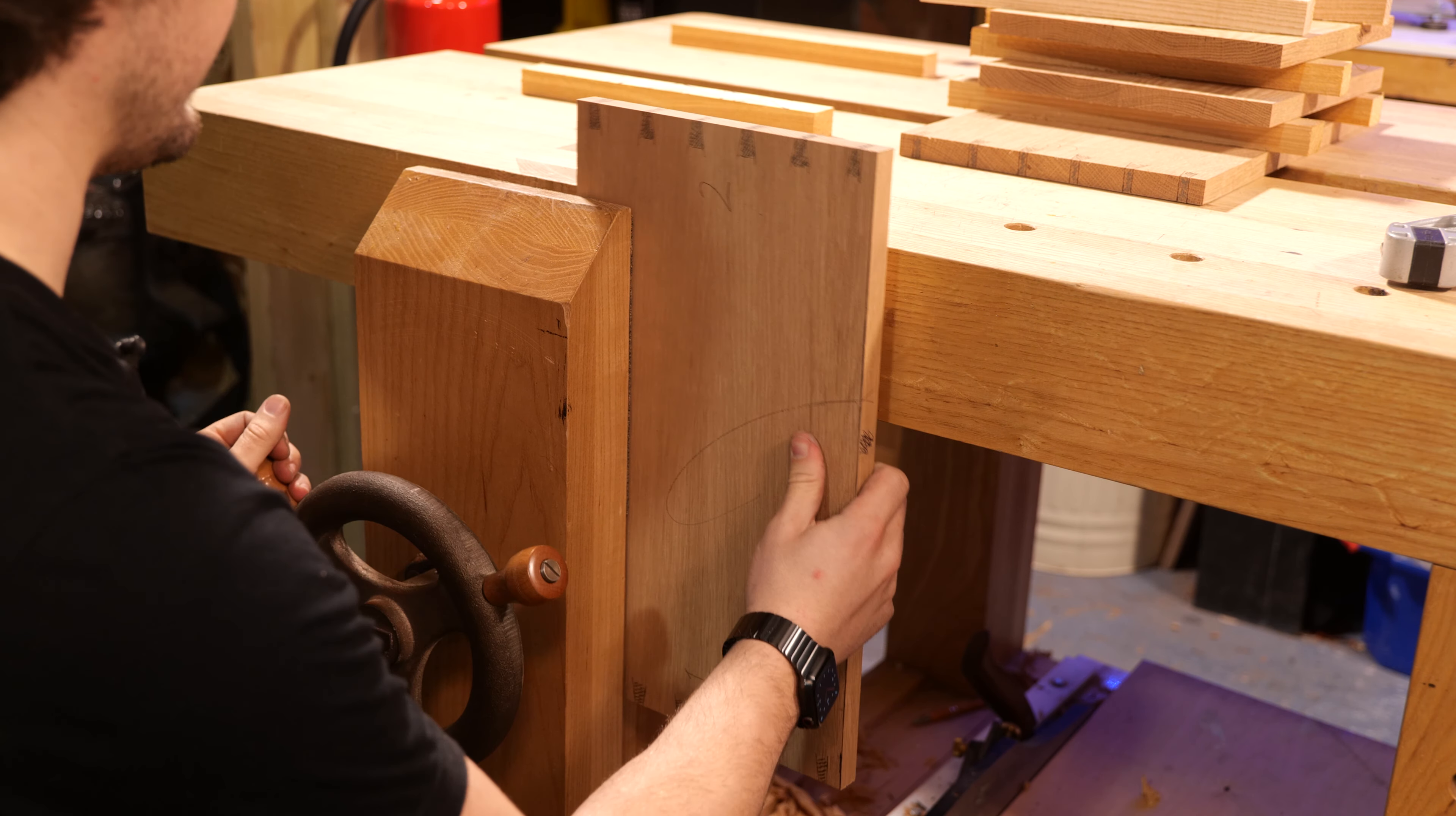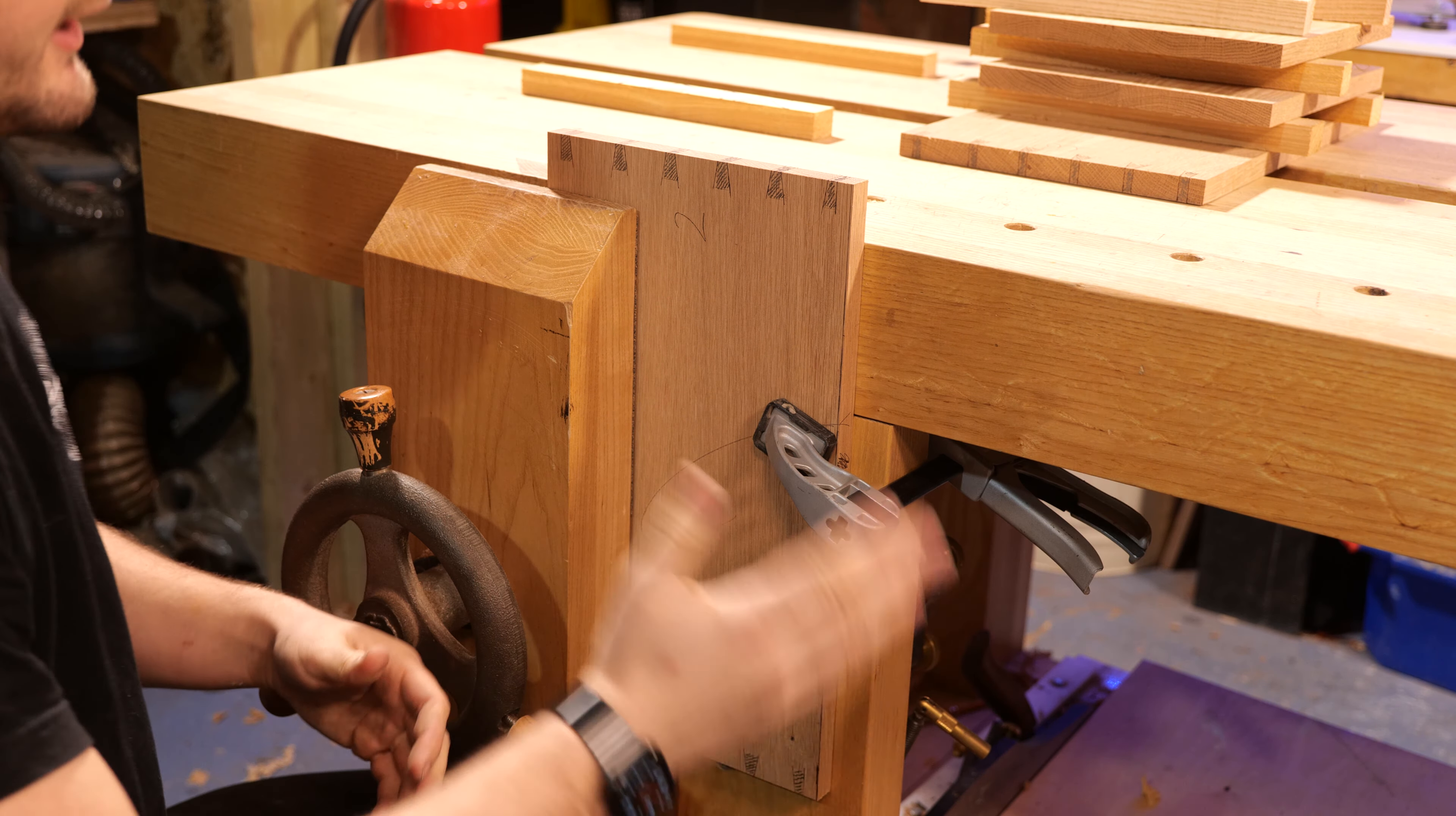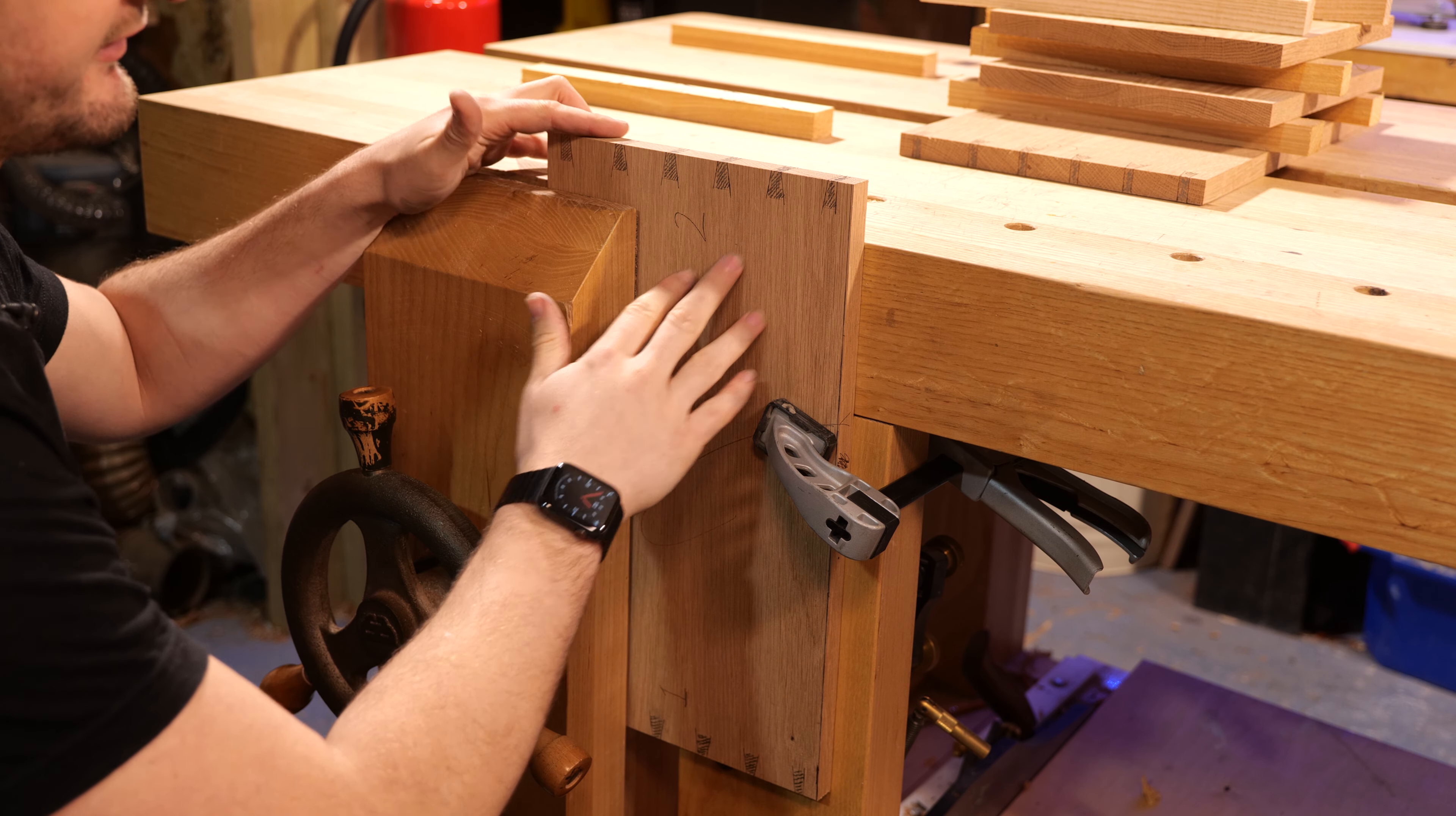So this is the setup I'm going for in terms of work holding. Nice and low in the vice, getting a sliding deadman across, and we're going to keep both sides of the component fully supported. I understand that not everyone has this beautiful setup I have here.